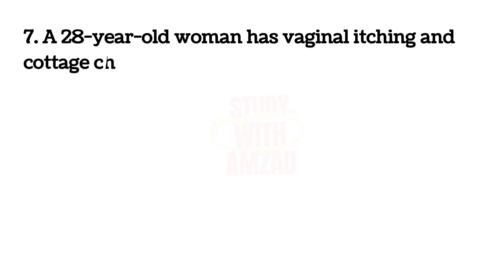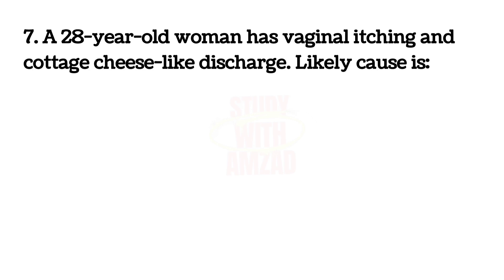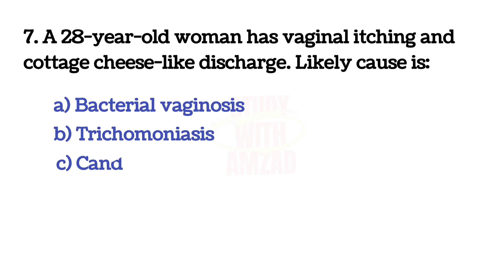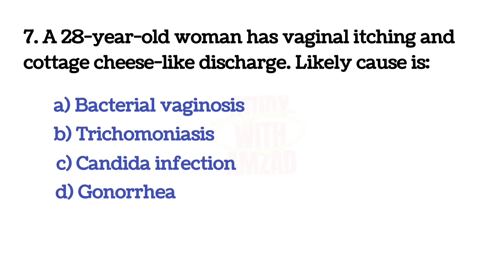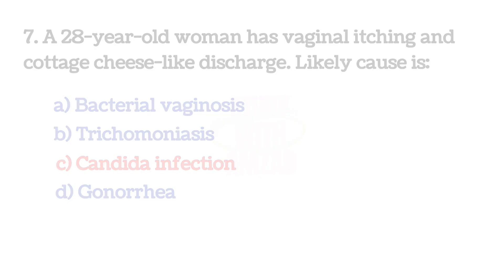A 28-year-old woman has vaginal discharge that is curdy and white. The likely cause is? The correct answer is C: Candida infection.